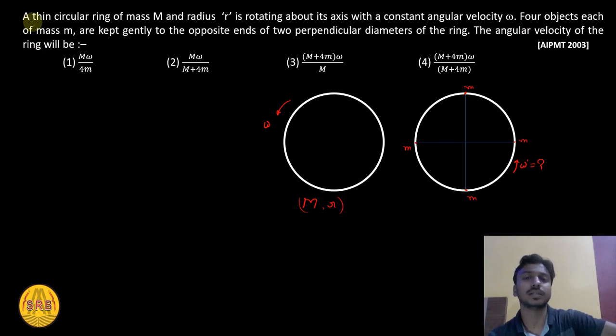So this is a thin circular ring of mass M, radius r, rotating about its axis with constant angular velocity omega.